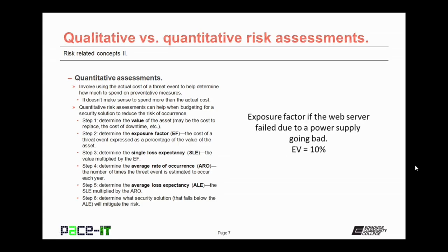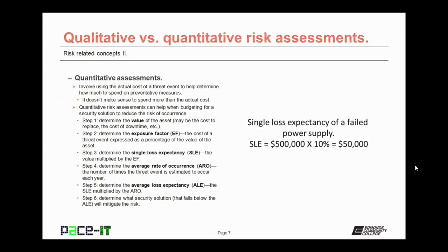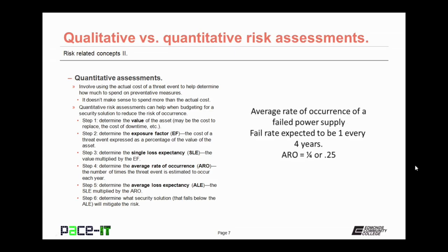The second step is to determine the exposure factor (EF). This is the cost of a threat event expressed as a percentage of the value of the asset. Step three is to determine the single loss expectancy, or SLE. The SLE equals the value of the asset (from step one) times the exposure factor (EF, from step two). Step four is to determine the average rate of occurrence (ARO) — that's the number of times the threat event is estimated to occur each year.